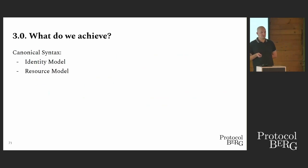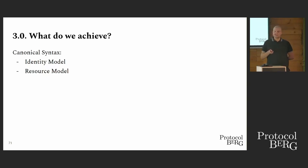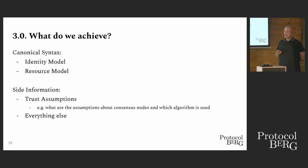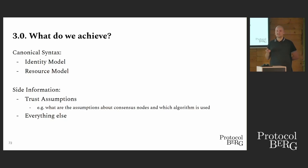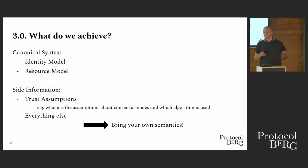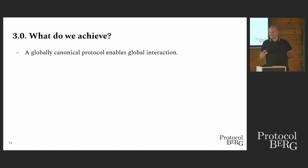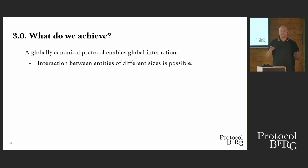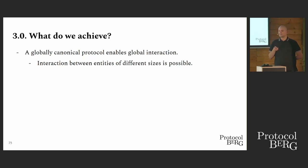So what do we achieve with all of these gymnastics? We get a canonical syntax for an identity model and a canonical syntax for a resource model. Everything else is side information — for example, trust assumptions, assumptions about how trustworthy consensus nodes are, which algorithms are used, economic histories, trust metrics, network transports. The only things we agree on is the syntax on top. So you can bring your own semantics for everything outside of the resource and identity model. With a globally canonical protocol, we can enable global interaction. And because we get scale-freeness from composability — via consensus and identity composition — we can enable interaction between entities of different sizes using the same mechanisms at the protocol level.